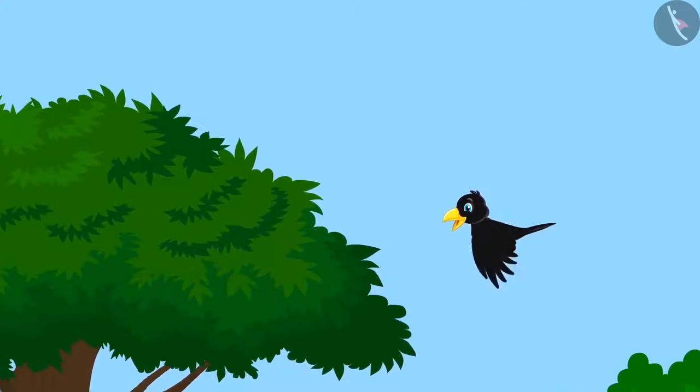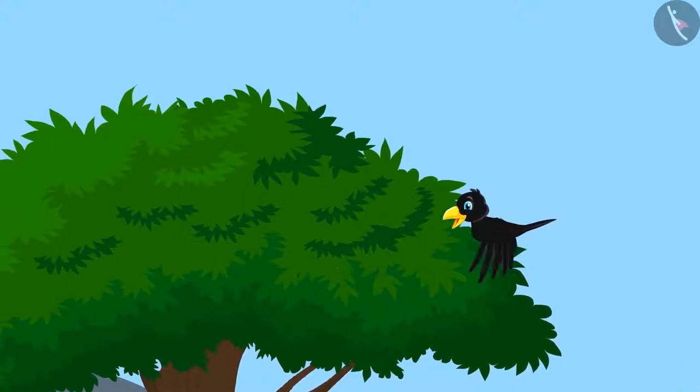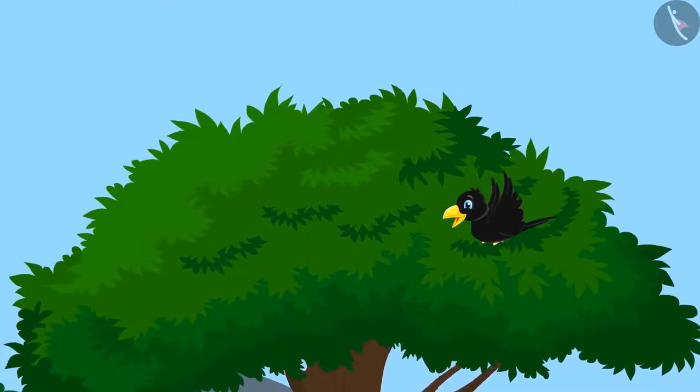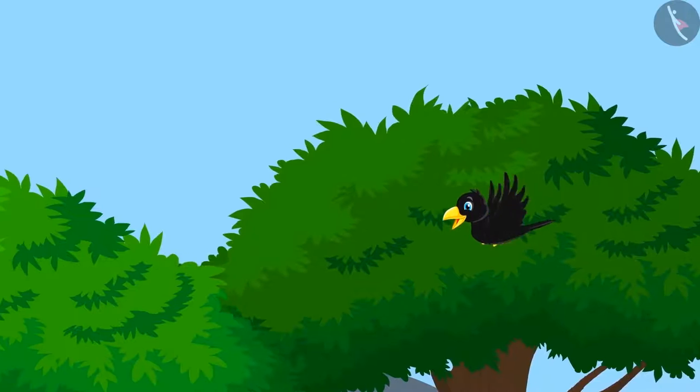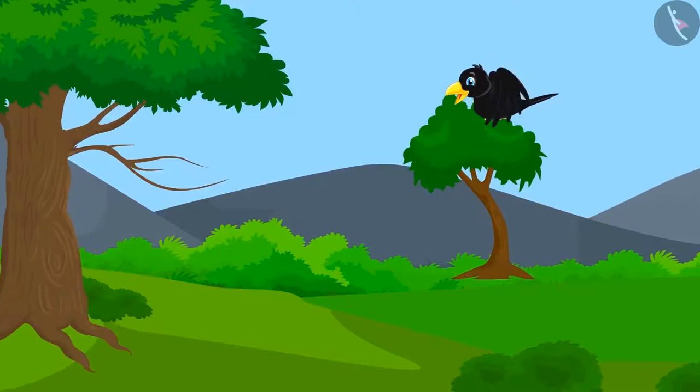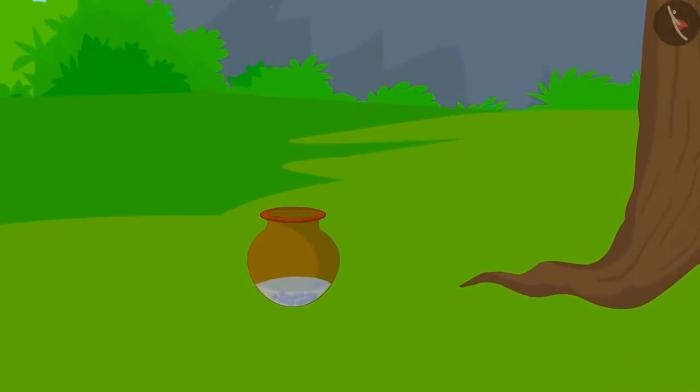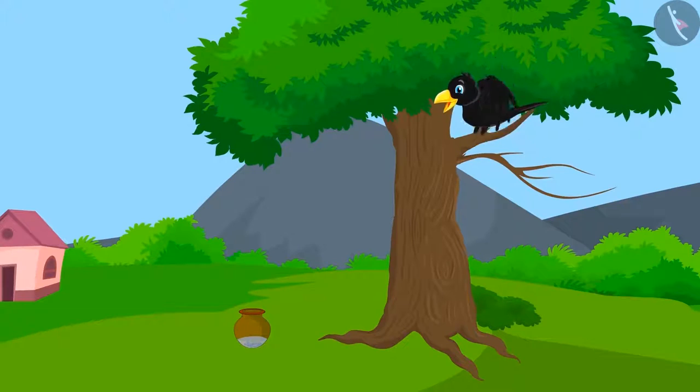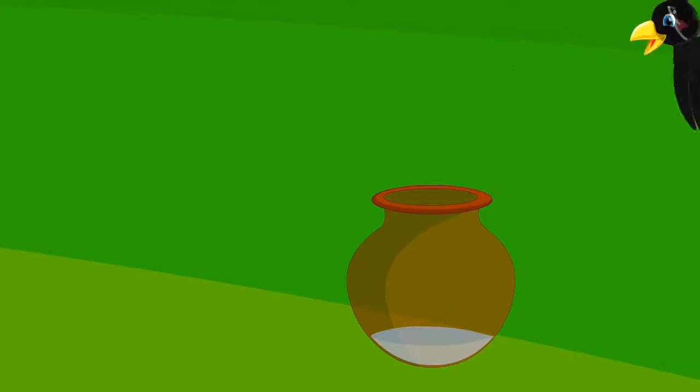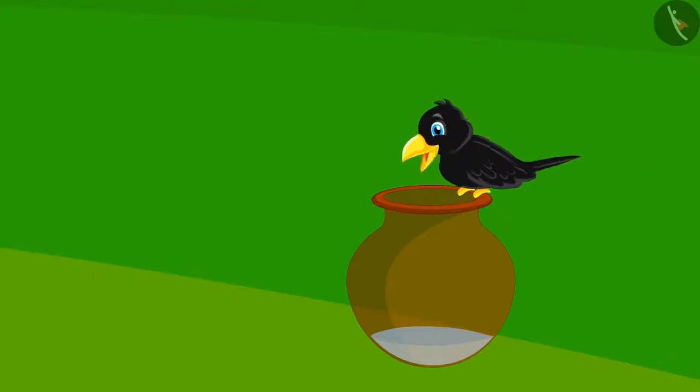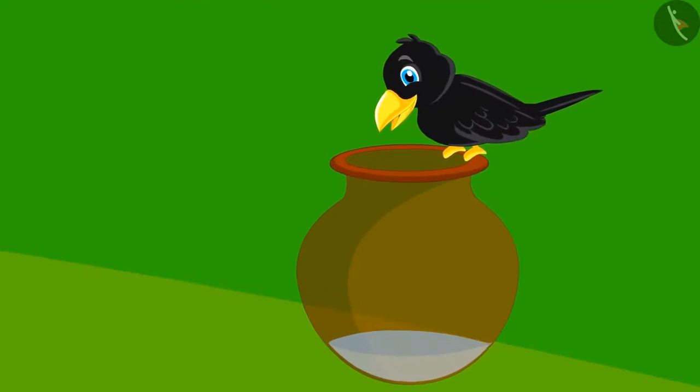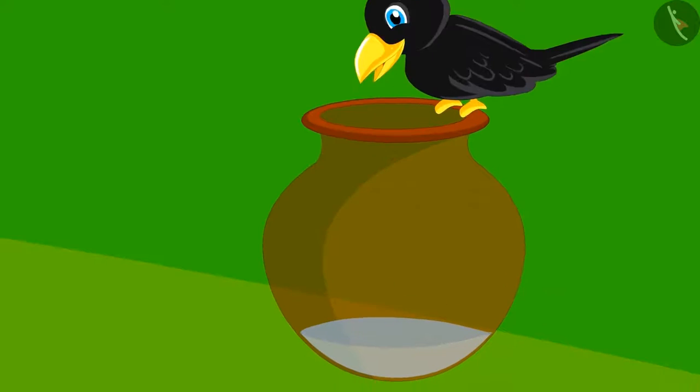One day, a crow was thirsty and wandering around in search of water. Just then, he saw a pot of water far away. The crow was very happy and flew to the pitcher. But the poor crow became very sad. The water in the pitcher was very low. The crow's beak could not reach the water.